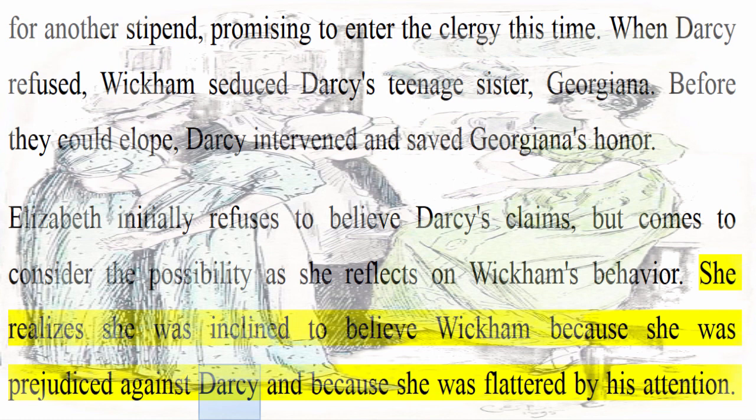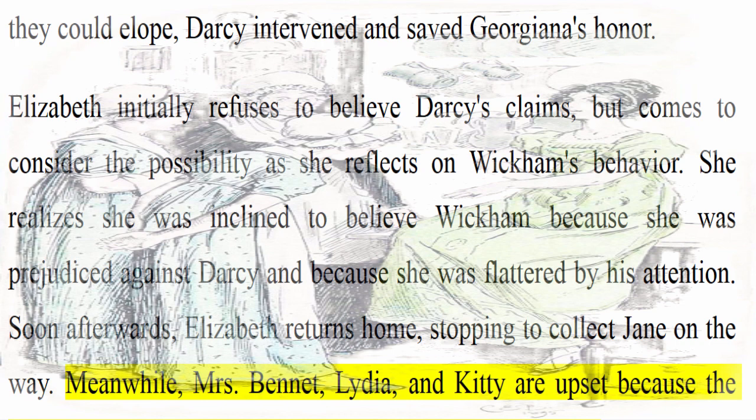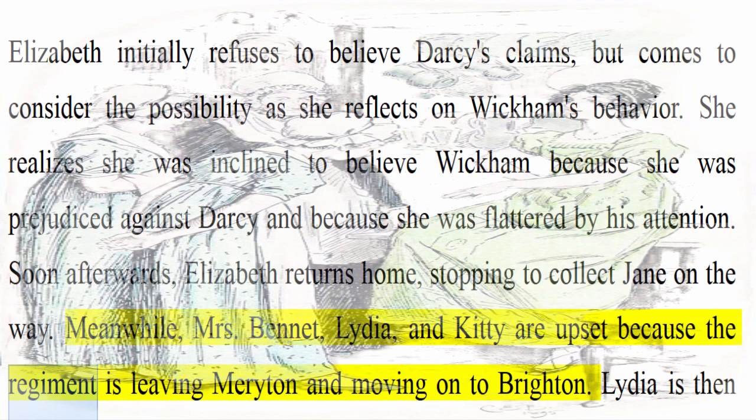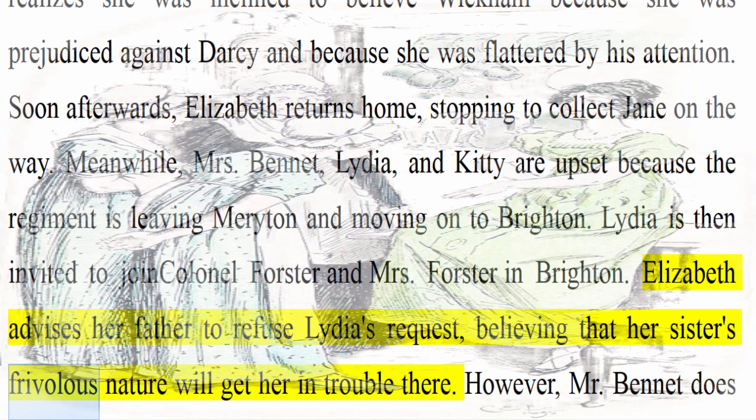Soon afterwards, Elizabeth returns home, stopping to collect Jane on the way. Meanwhile, Mrs. Bennet, Lydia, and Kitty are upset because the regiment is leaving Meriton and moving on to Brighton. Lydia is then invited to join Colonel Forster and Mrs. Forster in Brighton. Elizabeth advises her father to refuse Lydia's request, believing that her sister's frivolous nature will get her in trouble there. However, Mr. Bennet does not heed Elizabeth's advice.